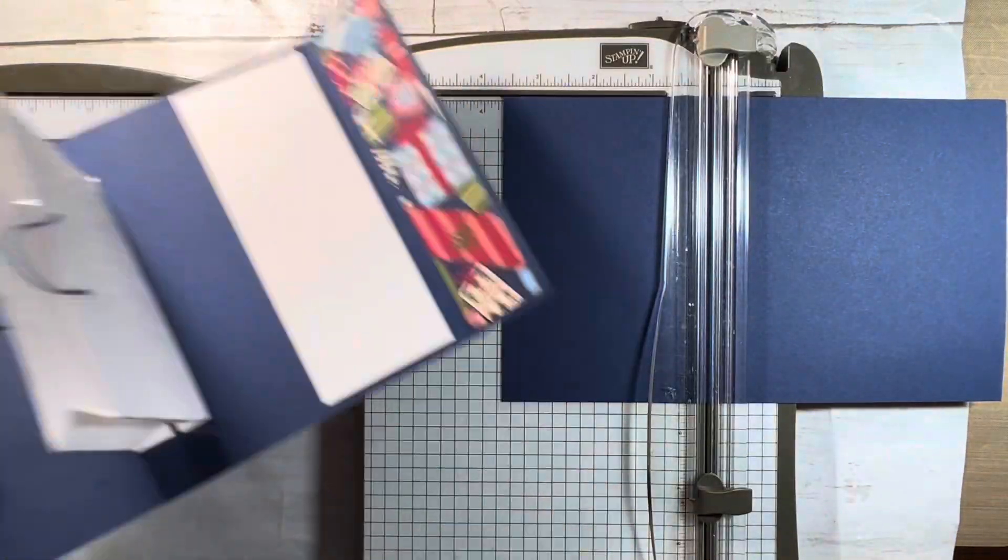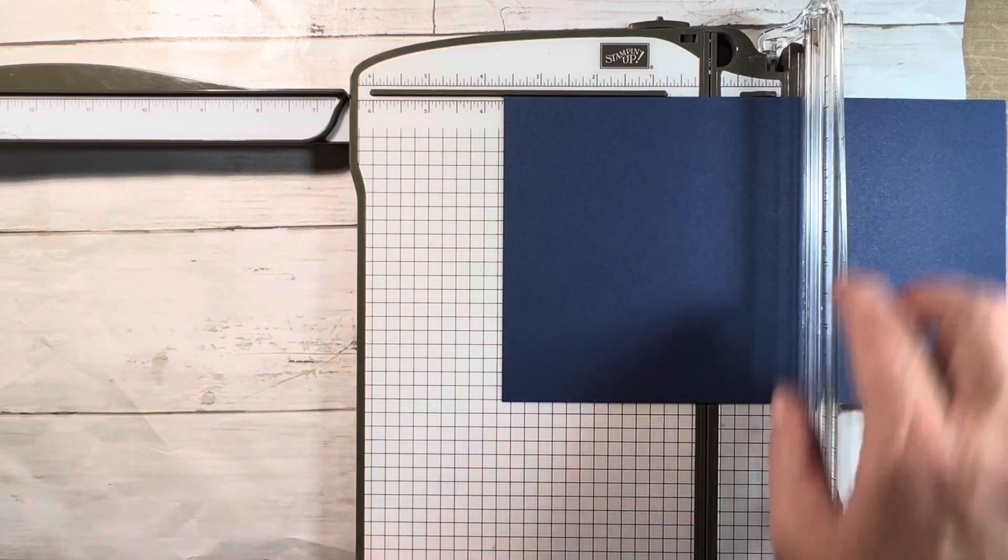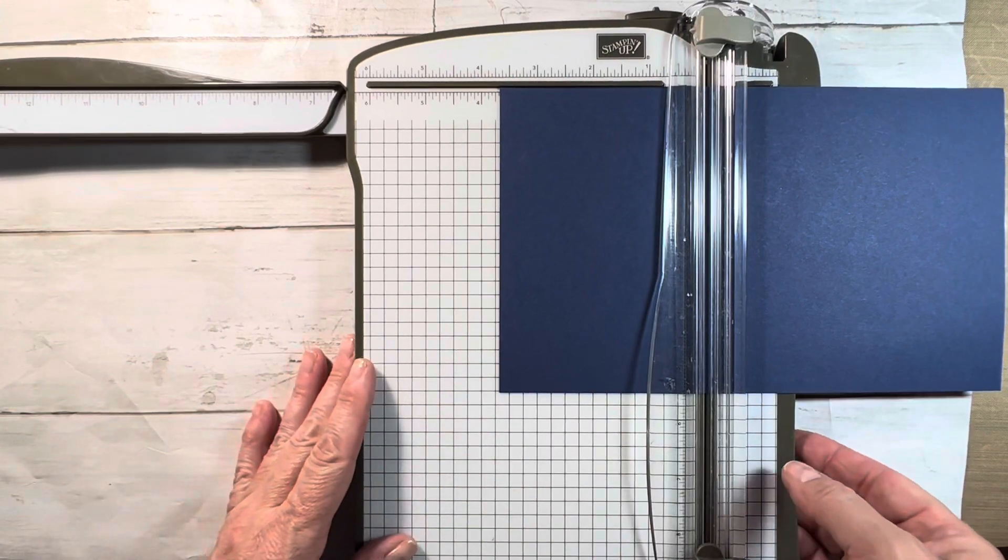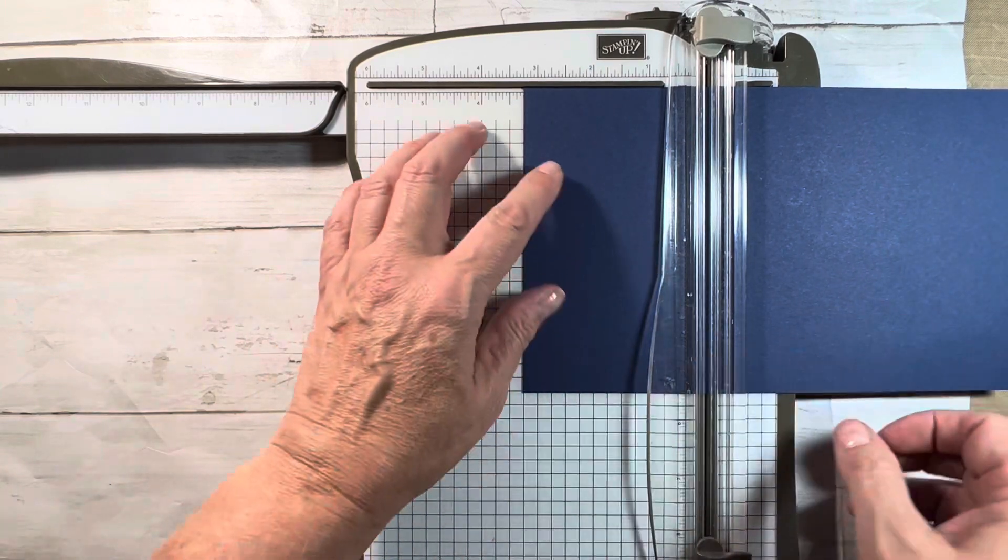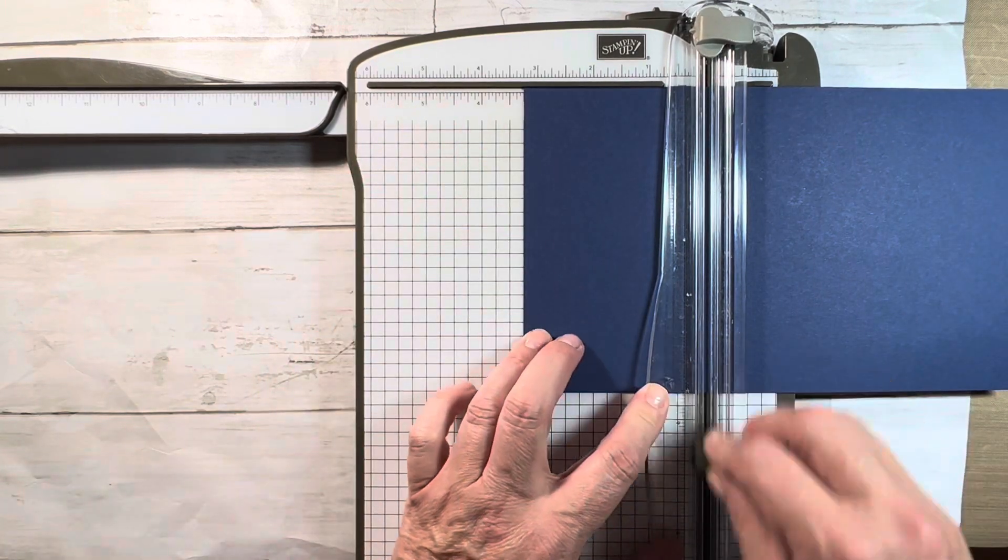Let's get started. To create the base of your card, you'll need a piece of Night of Navy cardstock which measures five and a half inches by nine inches, with the nine inch side at the top, scored at three and one quarters of an inch and seven and a half inches.